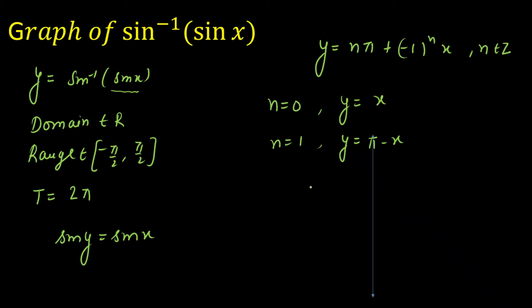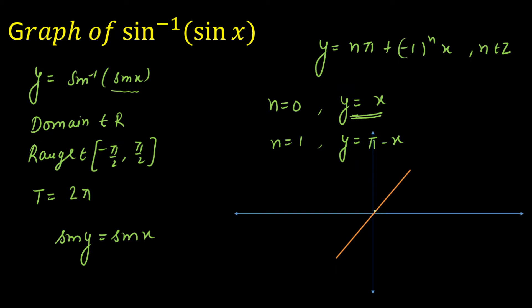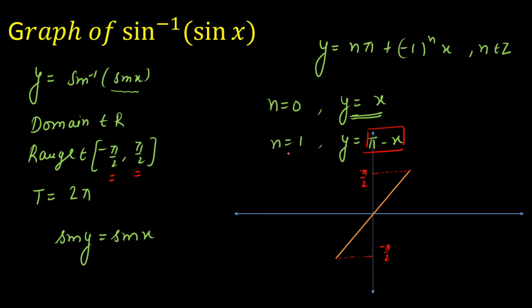This is our y-axis and this is our x-axis. For n = 0, that is y = x, which is a straight line passing through the origin with slope 1. I stop at π/2 and −π/2 because our range restricts the maximum to π/2 and the minimum to −π/2. The range cannot exceed π/2 or be less than −π/2, so these two points do not go beyond that.